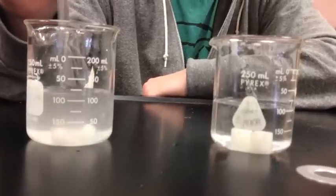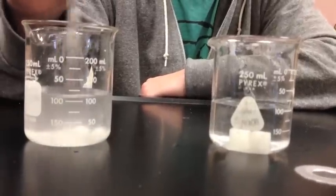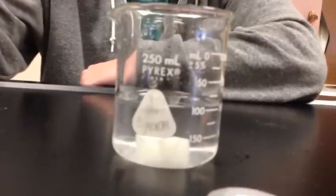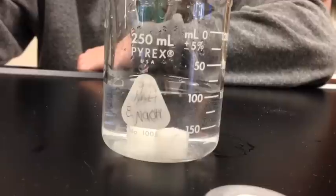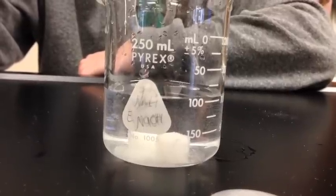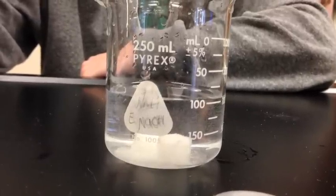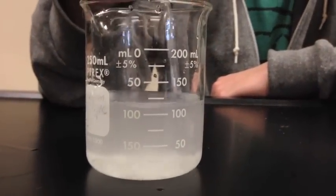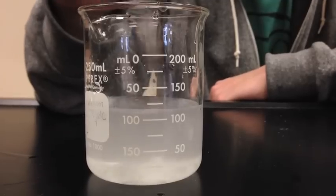As you can see, in the right beaker, the sugar cubes are still intact, but in the left beaker, the sugar is starting to break down and dissolve into the water. Slowly, on the right side, the cubes are breaking down, but with the help of stirring on the left side, the sugar is almost completely dissolved.